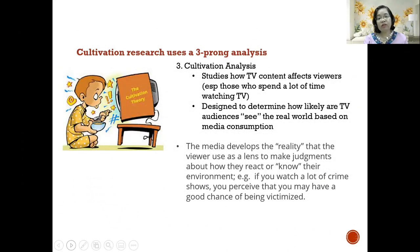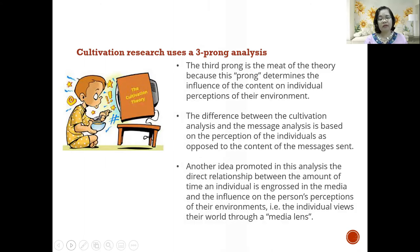The third prong is the cultivation analysis, which shows how TV content affects viewers — especially those who watch television for longer periods. It's designed to determine how likely audiences are to see reality based on media consumption — whether the audience uses a media lens in viewing the world. For example, if you watch a lot of crime shows, you might already feel that your society is not safe and that you have a fear of being victimized. This prong is the meat of the theory because it determines the influence of content on the individual's perception of their environment.